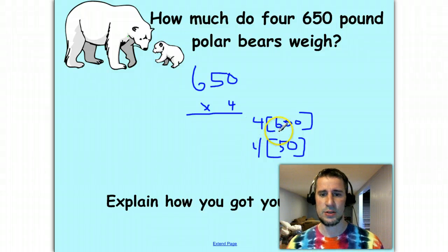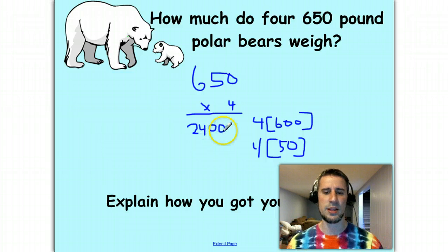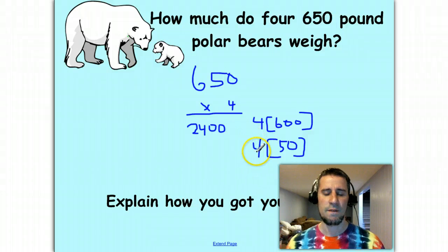There's that four, there's the six. I'm thinking to myself, four times six gives me 24. Remember those zeros when I'm multiplying with multiples of 10, I just slide those zeros right in the answer. Same thing here.